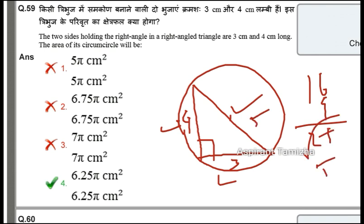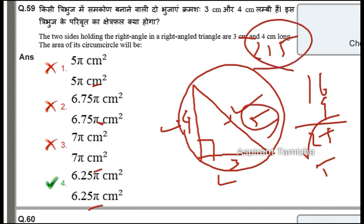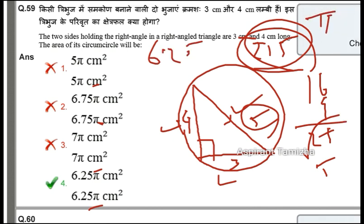4 squared plus 3 squared equals 25, so the hypotenuse is 5. This is the diameter, so the diameter is 5, and the radius R is 2.5. The area of the circle is π R squared. R squared is 2.5 squared, which is 6.25. So the area is 6.25π centimeter squared. The answer is option 4.